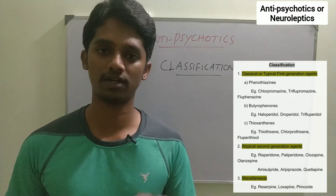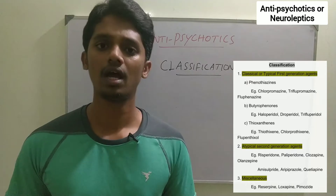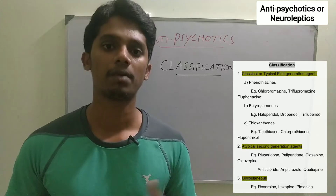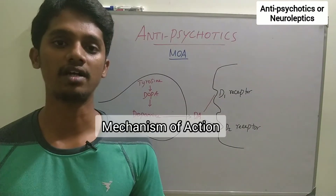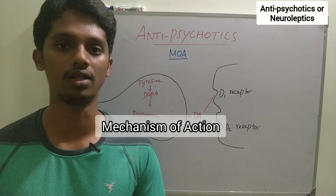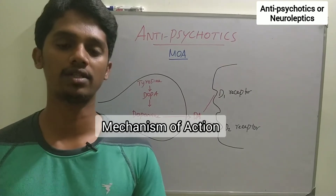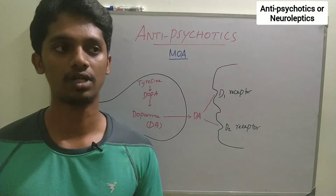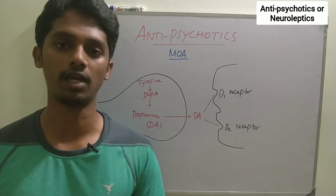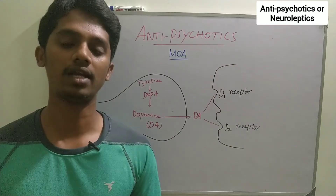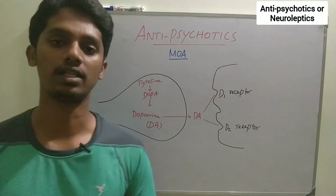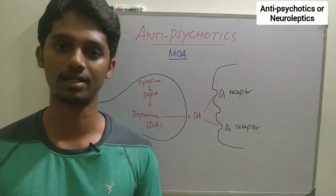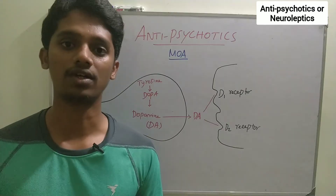Now for the mechanism of action of Chlorpromazine or the Phenothiazine group. In psychosis, there is over-activity in the brain. The CNS has neurotransmitters that either stimulate or inhibit activity. The brain node activity is driven by excitatory neurotransmitters, and when it is stimulated, it increases activity. When inhibited, it reduces activity.